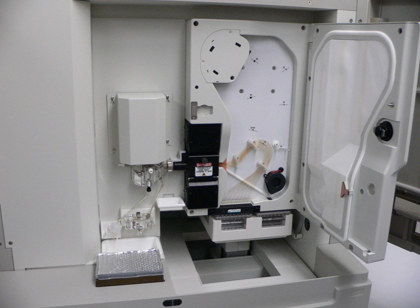Sequence assembly refers to aligning and merging fragments of a much longer DNA sequence in order to reconstruct the original sequence. This is needed as current DNA sequencing technology cannot read whole genomes as a continuous sequence, but rather reads small pieces of between 20 and 1000 bases, depending on the technology used. Third-generation sequencing technologies such as PacBio or Oxford Nanopore routinely generate sequencing reads greater than 10 kilobits in length, however, they have a high error rate at approximately 15 percent. Typically the short fragments, called reads, result from shotgun sequencing genomic DNA or gene transcripts.